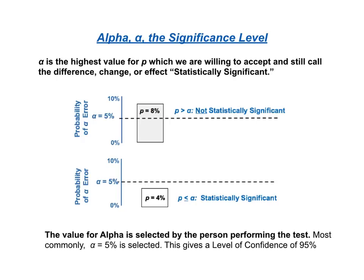For example, if p is subsequently calculated to be 8%, then p is greater than alpha and we fail to reject the null hypothesis. If p is calculated to be 4%, however, then p is less than alpha and we reject the null hypothesis.